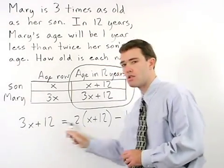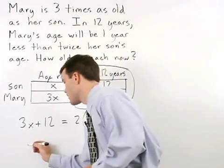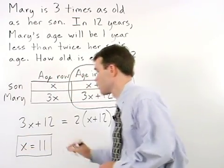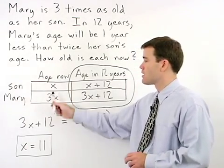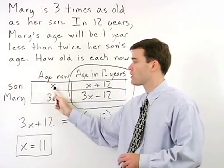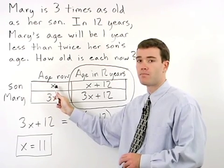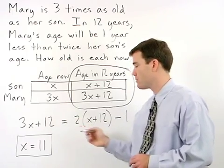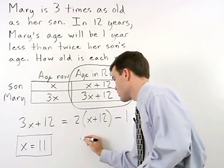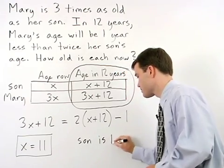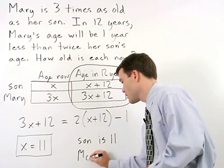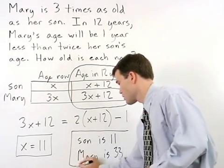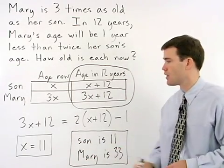Solving this equation, we can find that x equals eleven. What that means is that the son's age now is eleven. So Mary's age now is three times eleven, or thirty-three. Her son is eleven, and Mary is thirty-three. And that's our answer.